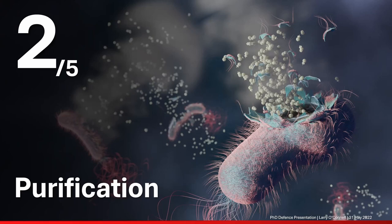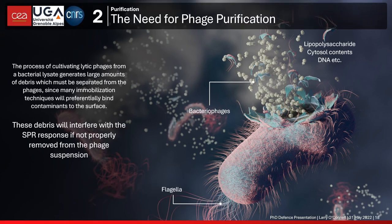Before creating a phage-functionalized biosensor, you need to purify the phages — which is far from trivial. Cultivating phages necessarily creates a very large amount of bio-debris which must be separated. There are lipopolysaccharides (endotoxin), cytosolic contents, genetic material, ribosomes, and flagella — particularly challenging to separate. All of these need to be removed, because immobilization techniques will preferentially immobilize the smaller contaminants, effectively creating a sensor surface functionalized with biological debris rather than the bacteriophages.